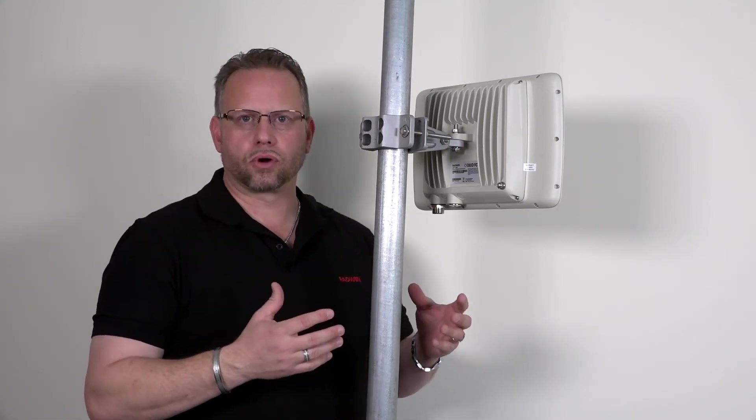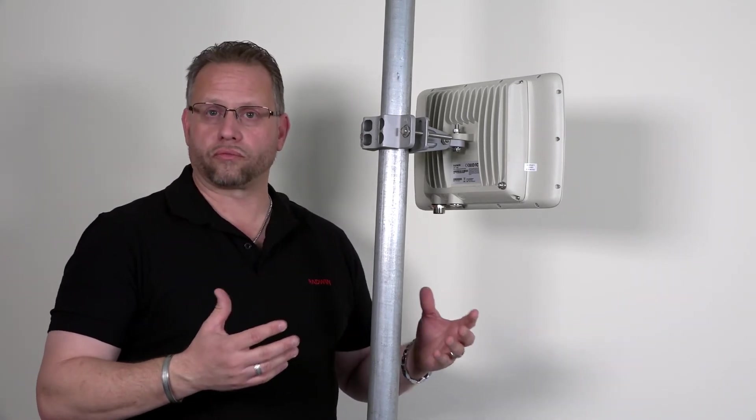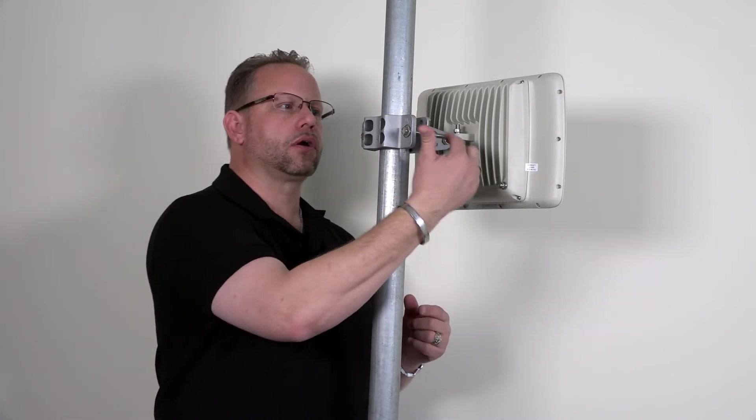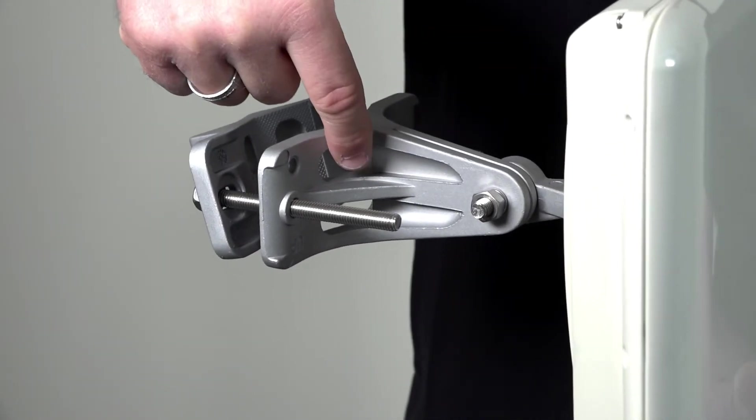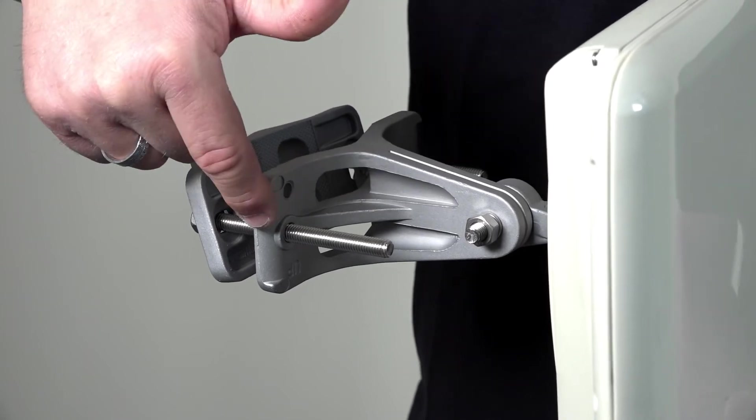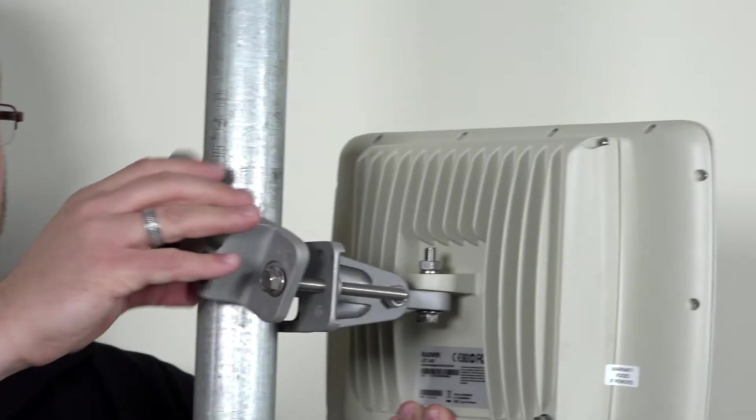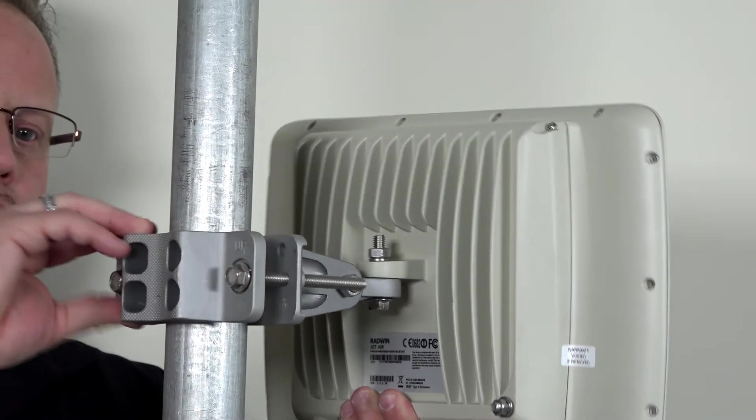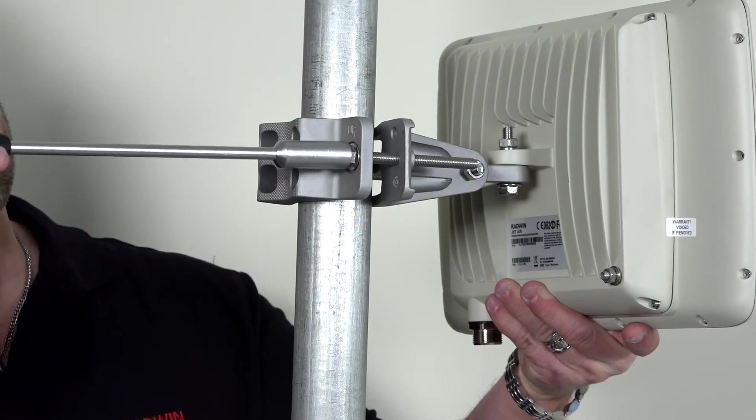If additional room is needed for a 4 or 4 and a half inch pipe there are grooves on the side of the bracket and grooves through the bracket so that you can accommodate a stainless steel post clamp to go around a larger diameter pipe.